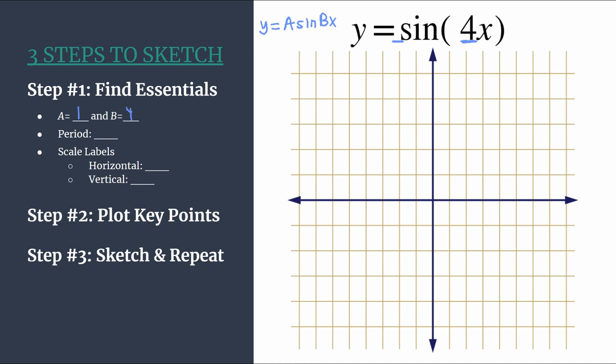First of all, it's important to know that B tells you how many cycles of your graph will happen between zero and two pi. So we will have four complete cycles of this sine graph happening between that space zero to two pi. That's just a good thing to know in general so that when you finish your graph you can look and see, okay, is that making sense? Did that actually happen?